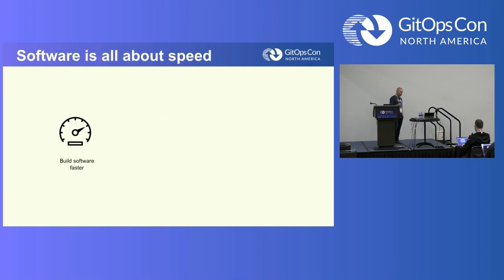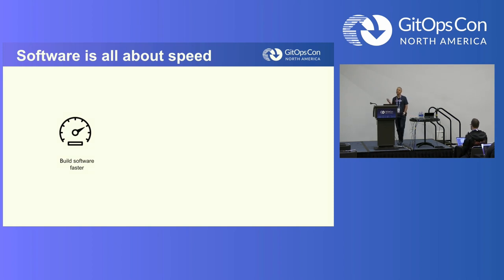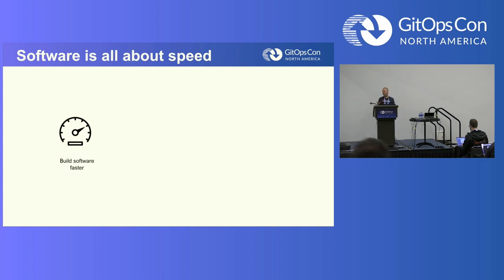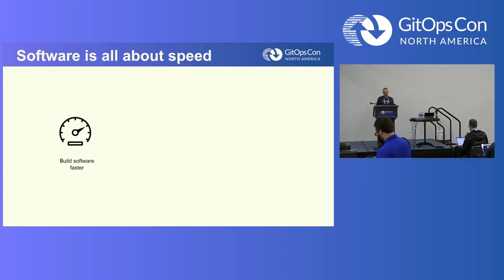We all know that software is all about speed. Any software organization wants to develop and deliver features to customers as quickly as possible. We want to react quickly, close vulnerability holes, and fix bugs as fast as we can. This is why DevOps became such a wide practice in our industry — it was widely adopted because it allowed us to automate basically everything and speed up our process.